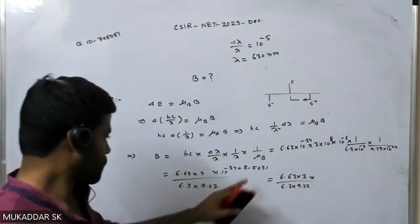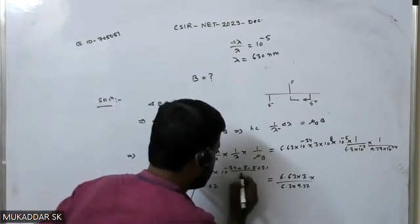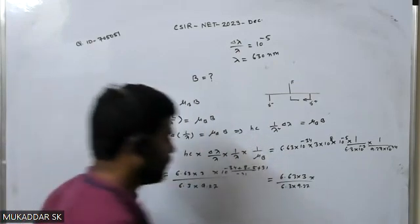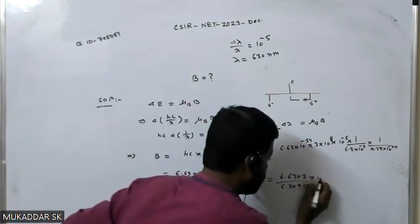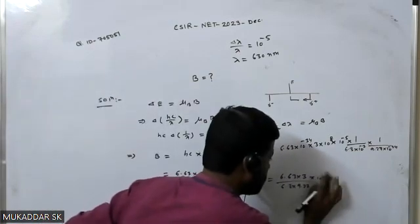Oh sorry, sorry, this will be plus 31, because minus 7 minus 24 that is minus 31. If you bring it in the numerator that will be plus 31. So all together, this minus 31 plus 31, so this 10 power 0, this is nothing but 1.